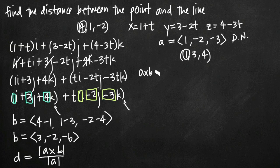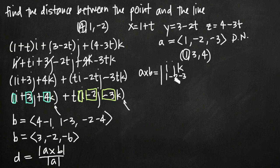The first thing we want to do is find the cross product of a and b. The cross product of a and b is computed using a 3 by 3 matrix. We put i, j, and k in the first row, then vector a — 1, negative 2, negative 3 — in the second row, and vector b — 3, negative 2, negative 6 — in the third row.